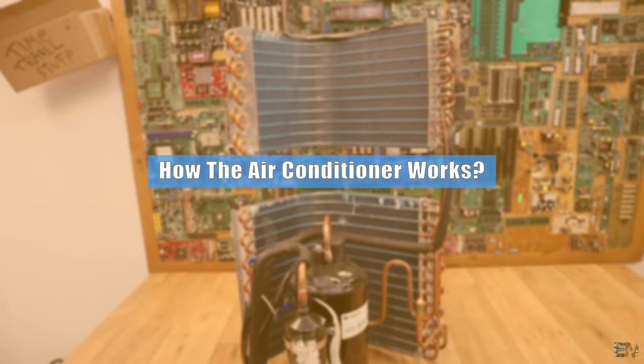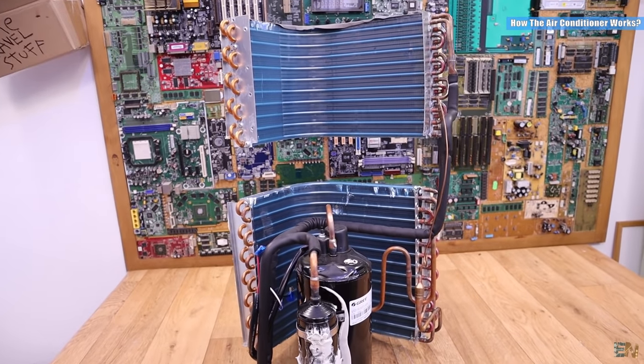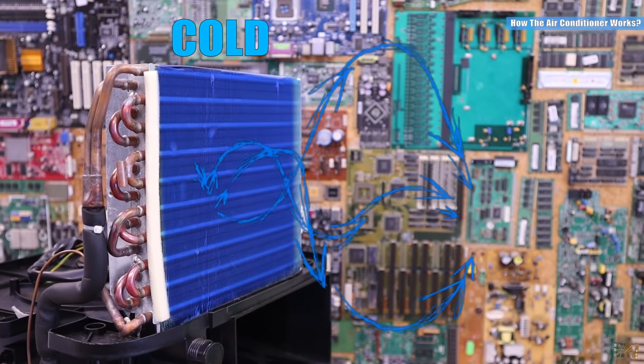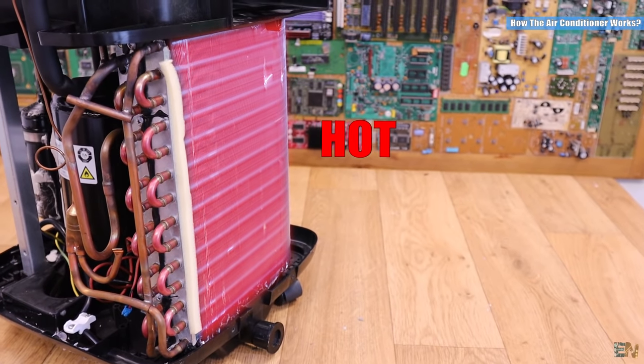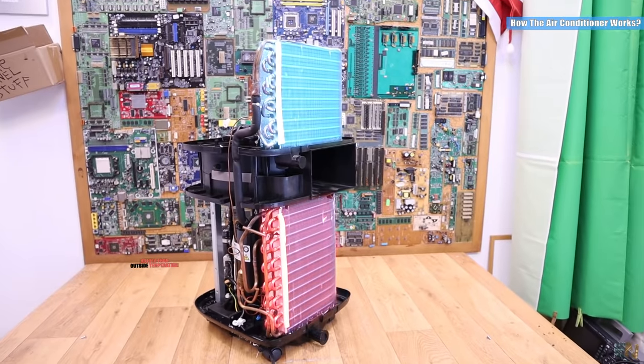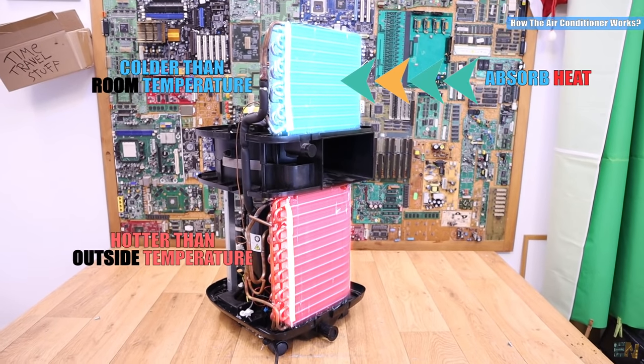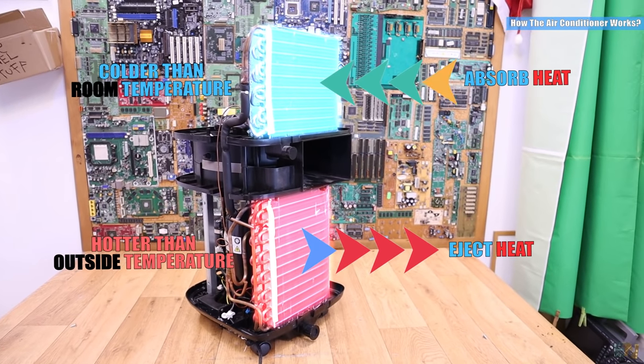So now let's understand how the air conditioner works. Any basic conditioner has two main components that are called radiators. One will get colder than the room temperature and the other one will get hotter. Obviously by the laws of thermodynamics, the temperature always wants to get stable at an equal value. So the cold radiator will absorb the heat from the room and the hot radiator will expose that heat on the outside of the room.